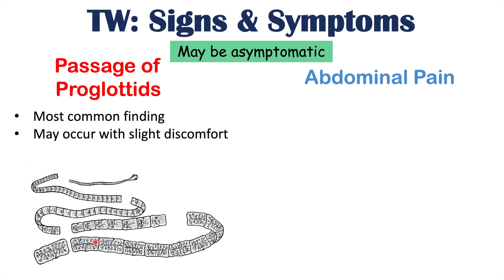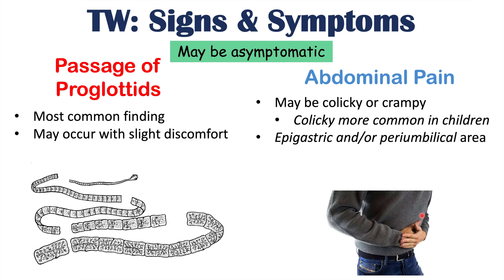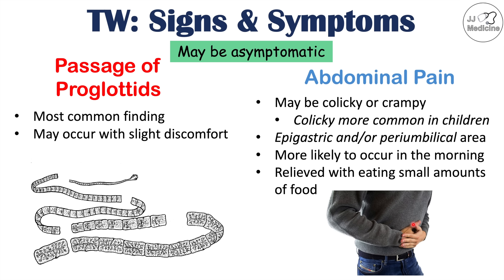Another common finding is abdominal pain. This pain may be colicky or crampy — it can come and go, or be vague. Colicky pain is more common in children. Some patients may describe epigastric pain, which is above the belly button in the center of the abdomen, or pain in and around the periumbilical area. Interestingly, this abdominal pain is more likely to occur in the morning, and it is characteristically relieved with eating small amounts of food.